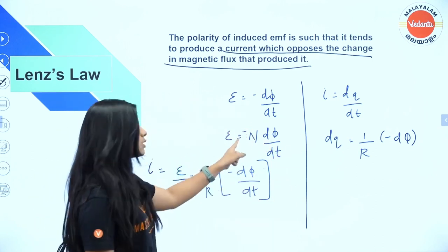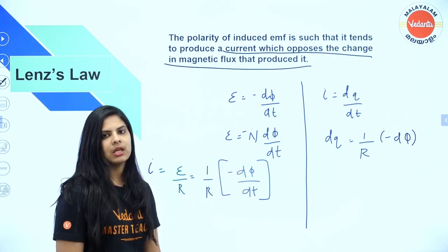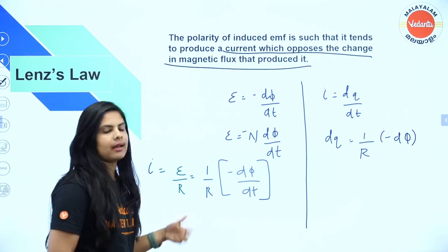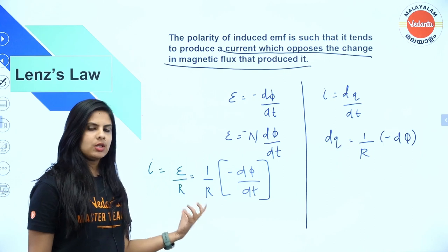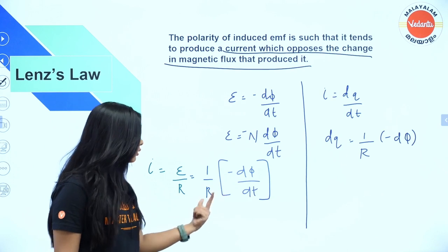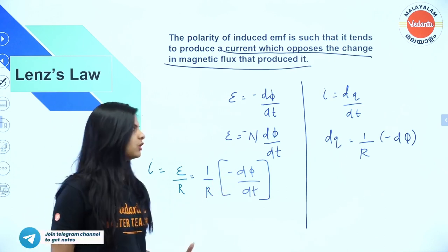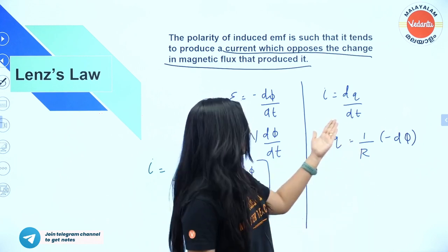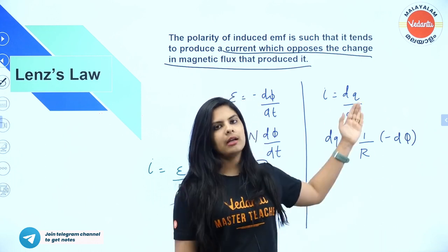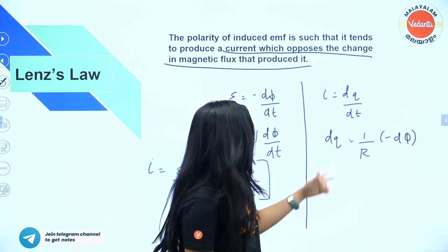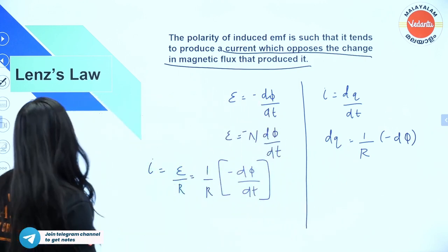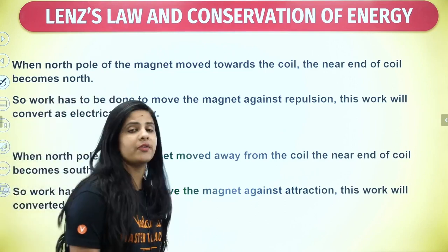For a coil with N turns, induced EMF = −N dφ/dt. Current is equal to induced EMF divided by resistance R. Also, dQ/dt is current, so we can derive the charge equation as well.